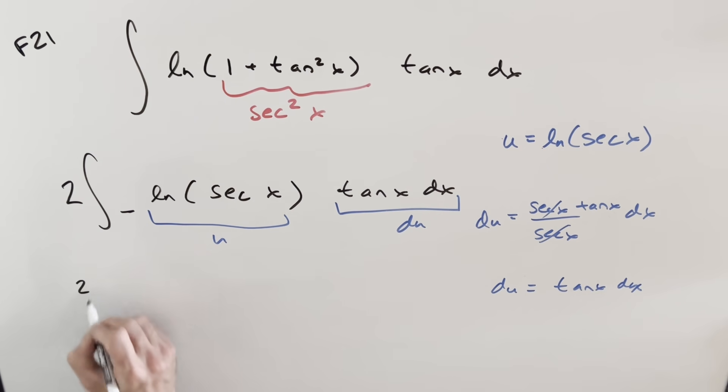But let's substitute, and we get 2 times just u du. Go ahead and integrate. This is just power rule. We're going to have u squared over 2.